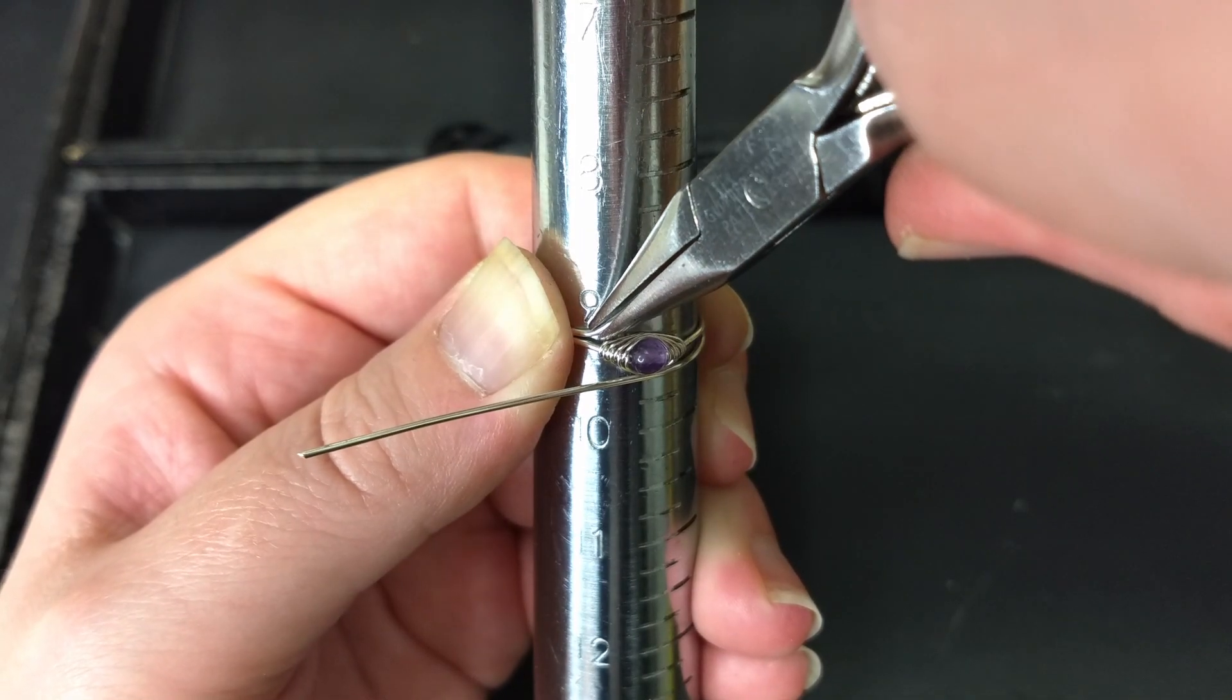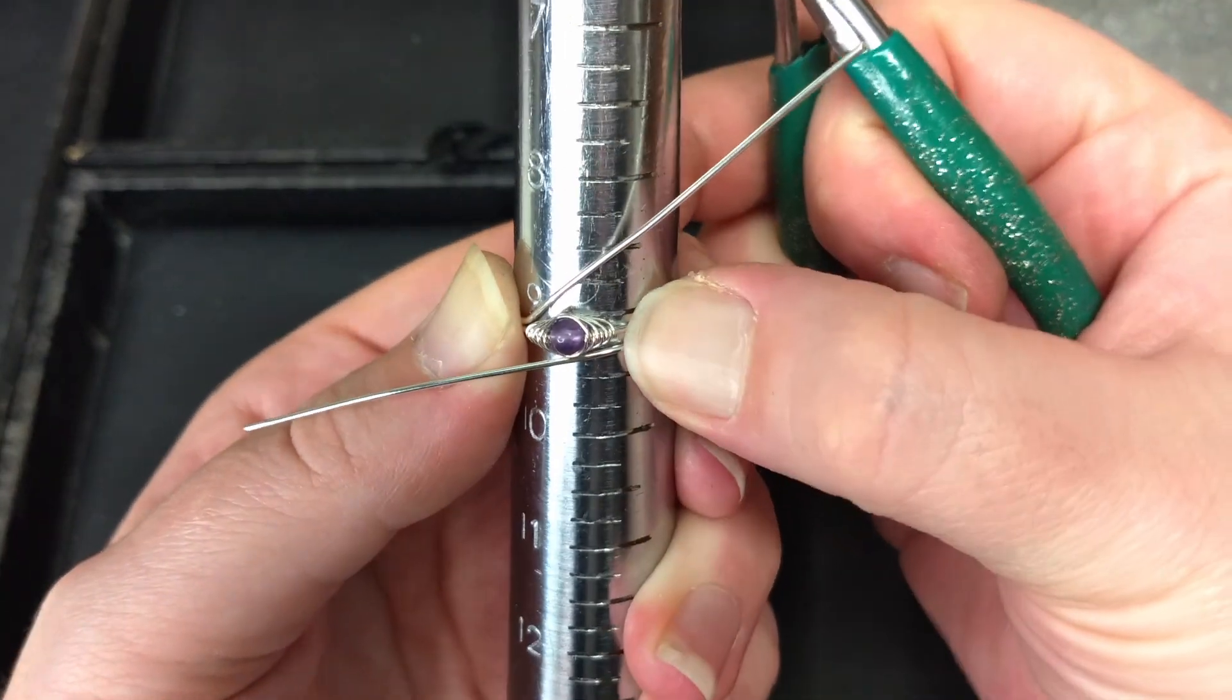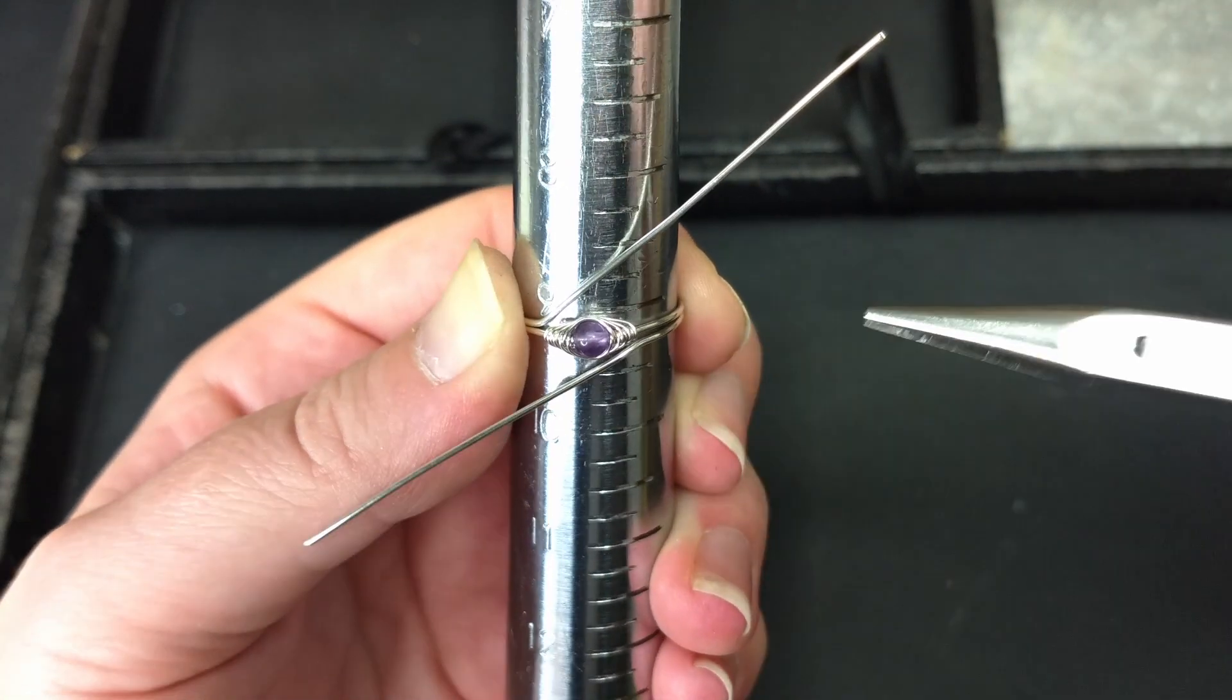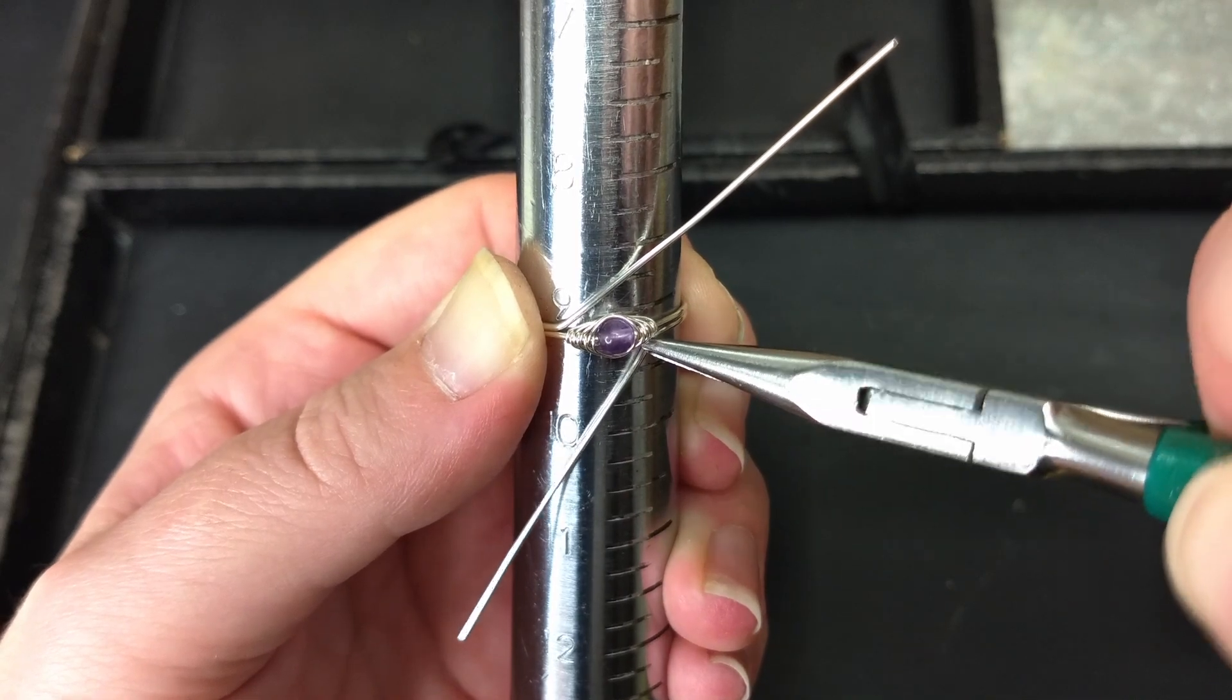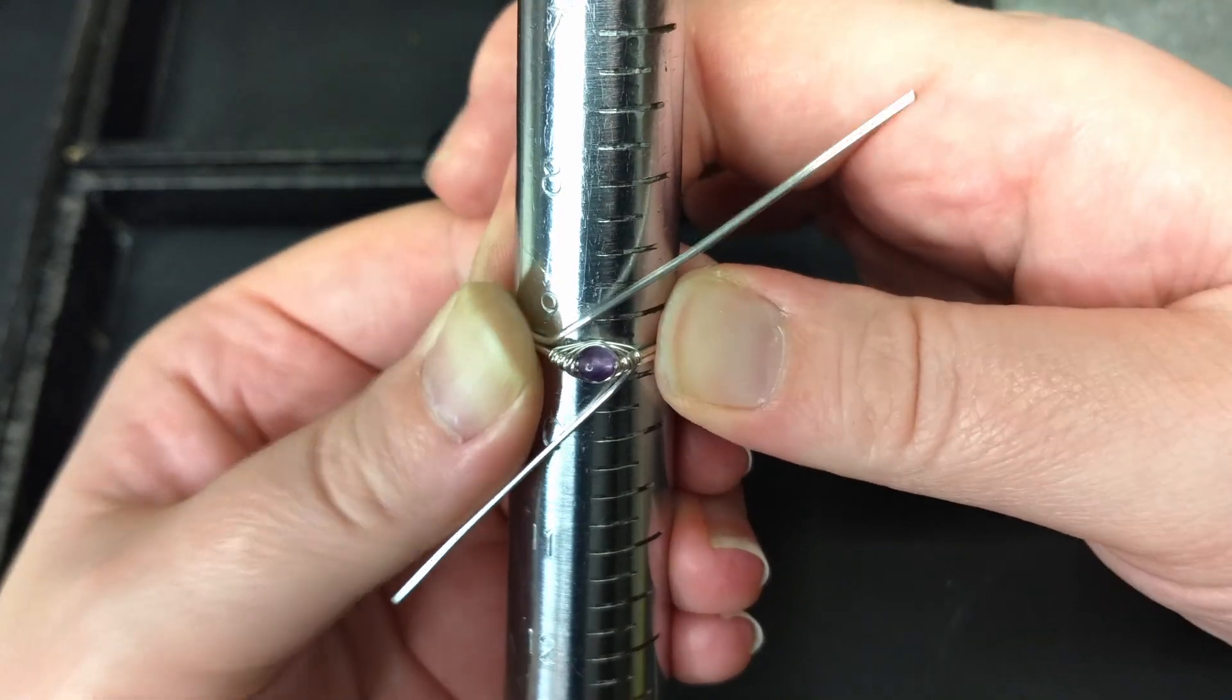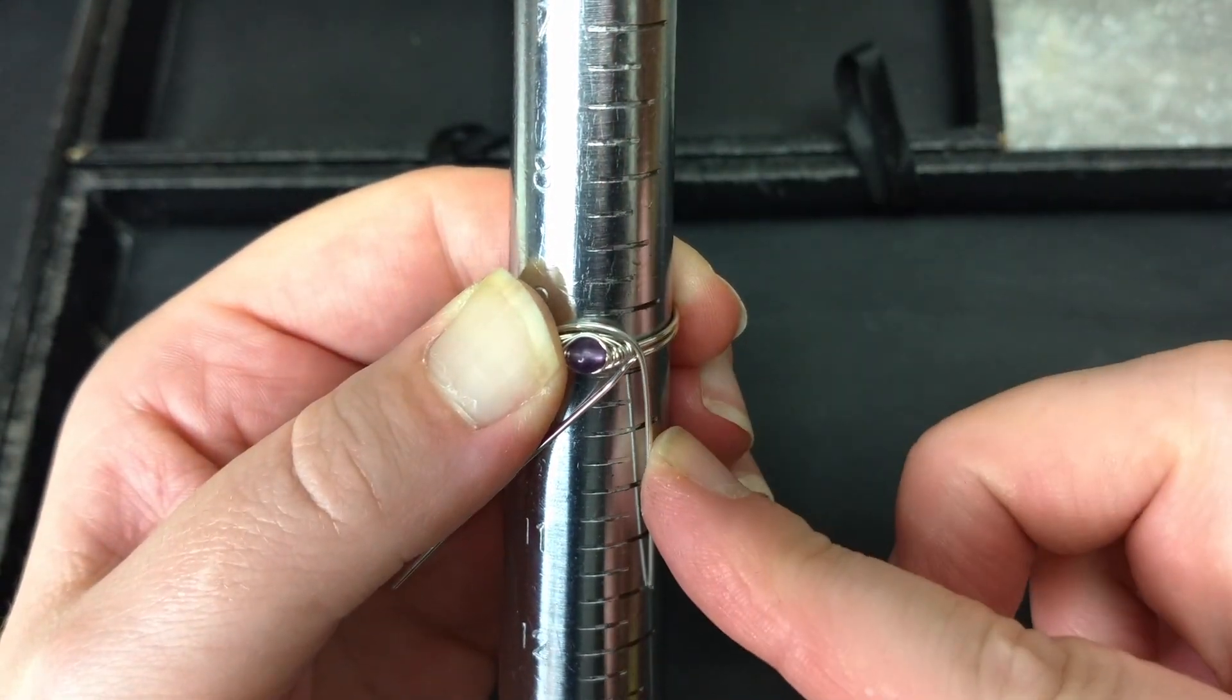Take the chain nose pliers and put 120 degree angle bends at the corners where the wrap starts and ends. Holding the piece secure with your thumb, curve the top wire over the top of the bead and then down at the corner.